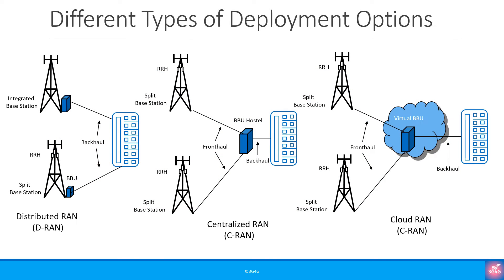What is the main advantage of each topology? You might read many different things in publications, but they don't all apply in each scenario. Take DRAN — the main advantage is that the site is self-contained; you just need the backhaul to connect to the core. This means you can have backhaul with lower capacity and the site would still continue to perform. In contrast, CRAN requires dark fibre, ideally, so the location of the BBU hostel or cloud has to adhere to that distance limitation.